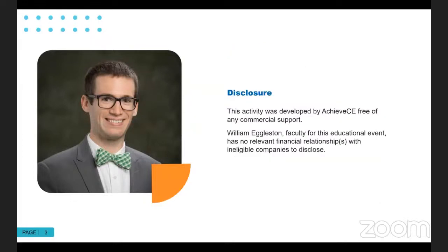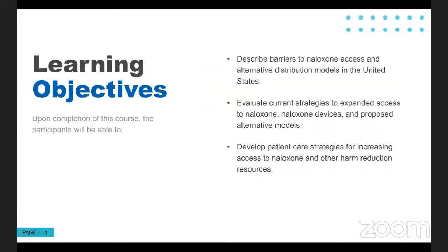This activity was developed by Achieve CE, free of any commercial support, and I have no actual or potential conflicts of interest to disclose. By the end of today's presentation, you'll have a better understanding of the barriers that people face in the United States when trying to access naloxone, and how alternative distribution models can help us to overcome some of these barriers. We'll take a closer look at these different models, understand the devices involved, and how each of these can impact the efficacy of the program. Lastly, we'll describe some patient care strategies that can help you increase access to naloxone and other harm reduction resources for patients in your community.